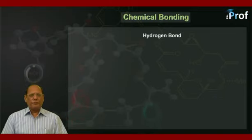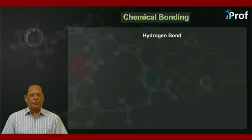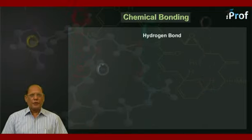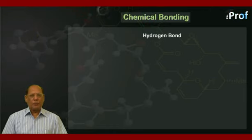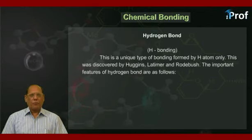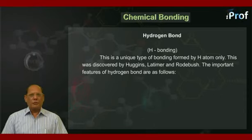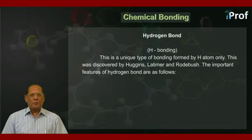Now we shall study the third part of our chapter on chemical bonding, in which we shall study hydrogen bond, that is H bonding. This is a unique type of bonding formed by H atom only. It was discovered by Huggins, Latimer, and Rodbush. The important features of hydrogen bond are as follows.